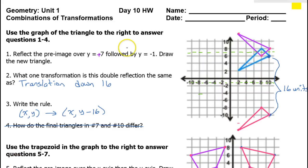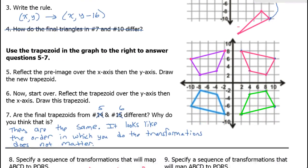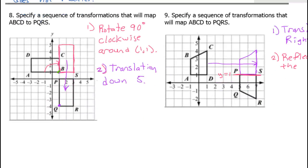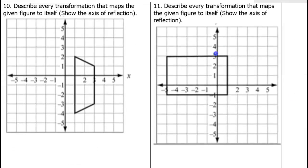In this video we will pick up where we left off. We are practicing combinations of transformations, that's two or more transformations. So far in the previous video we've done the first page of this worksheet and now we're moving on to the second page. Problem number 10: describe every transformation that maps the given figure to itself. Reflections and rotations will sometimes map a figure onto itself.